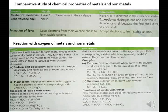Reactions of metal oxides with water: metallic oxide gives a base on reacting with water. Base turns red litmus blue. Na2O + H2O → 2NaOH; K2O + H2O → 2KOH; MgO + H2O → Mg(OH)2; CaO + H2O → Ca(OH)2 + heat.